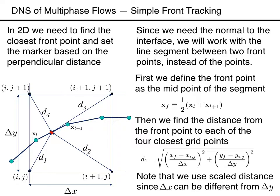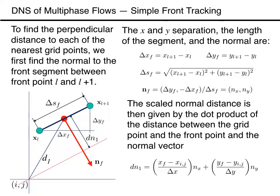The distances to the other grid points are found in the same way. To find the perpendicular distance from the front to each of the nearest grid points, we first find the normal to the front segment between front point L and L+1. Defining delta_xf and delta_yf as the difference between the end points of the segment, the normal is given by (delta_yf, -delta_xf) divided by the length of the line segment, computed as the square root of delta_xf squared plus delta_yf squared.